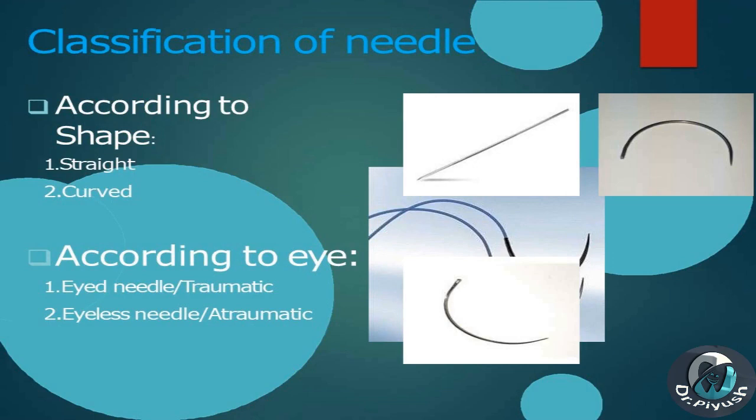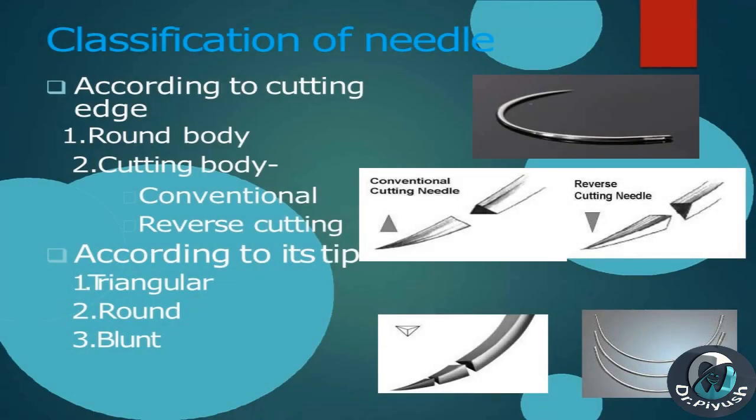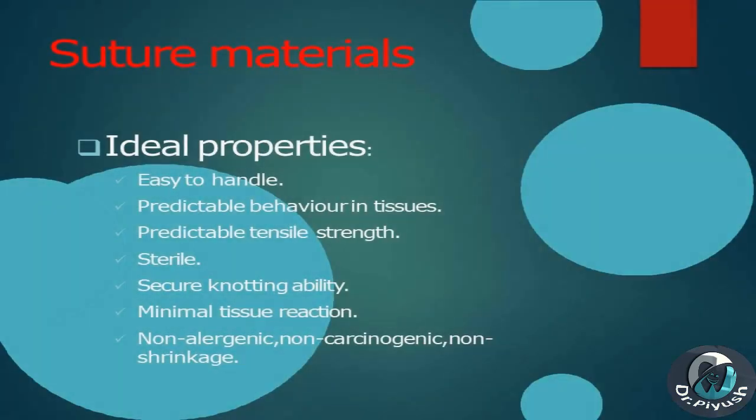Classification of needle according to shape: 1. Straight, 2. Curved. According to eye: 1. Eyed needle (Traumatic), 2. Eyeless needle (Atraumatic). According to cutting edge: 1. Round body, 2. Cutting body — Conventional or Reverse Cutting. According to tip: 1. Triangular, 2. Round, 3. Blunt.